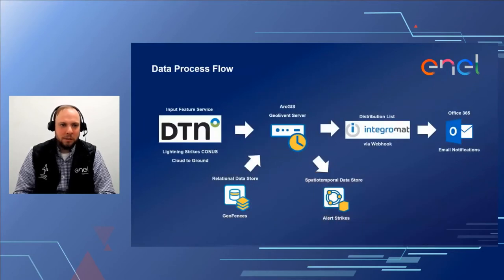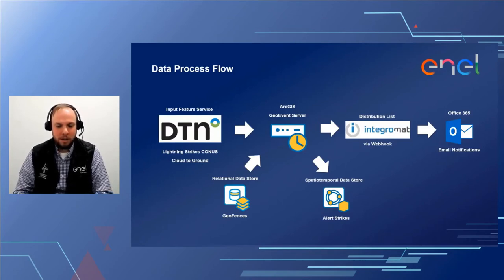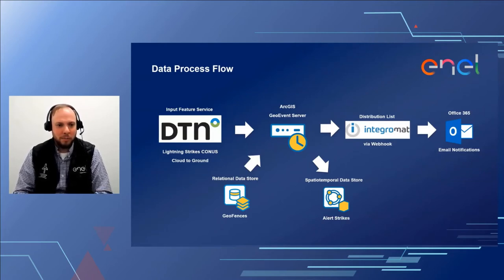On this next slide, we're showing the data process flow. We're receiving this data from a weather service provider called DTN. What's really great about this company is they provide all of these data streams in native Esri feature service formats, so they're very easy to integrate into your ArcGIS Online or ArcGIS Portal environments. You can just bring them in, store the credentials, and then add them to your maps.